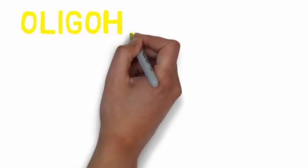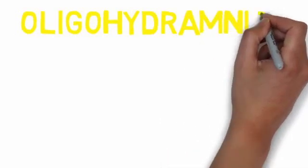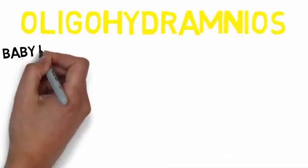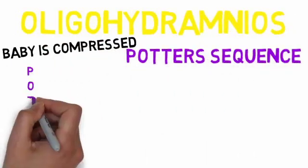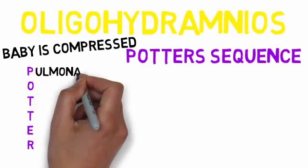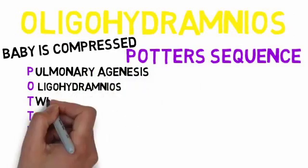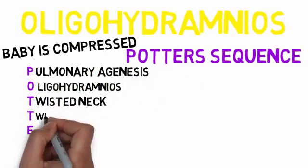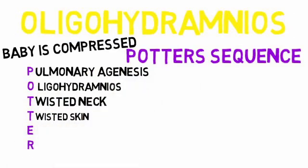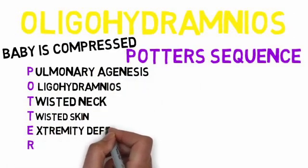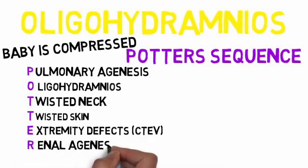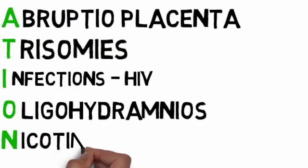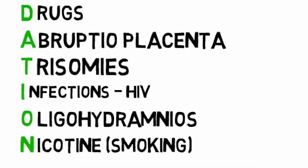What happens in oligohydramnios? The baby is compressed, leading to Potter sequence — P-O-T-T-E-R: Pulmonary agenesis, Oligohydramnios, Twisted neck, Twisted skin, Extremity defects such as CTEV, and Renal agenesis. The last cause of IUGR is nicotine/smoking.